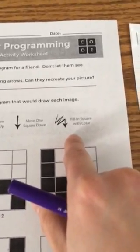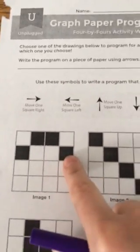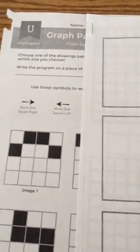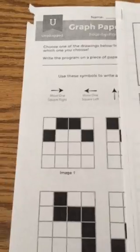The first activity, you will choose one of these six images. I'm going to start with image number one. This is the image that I want my partner to recreate and I'm going to show her using arrows.